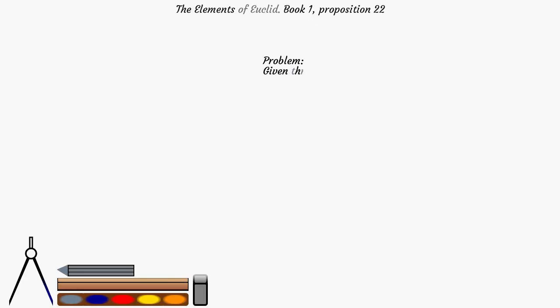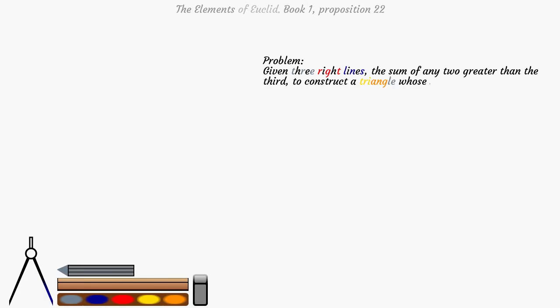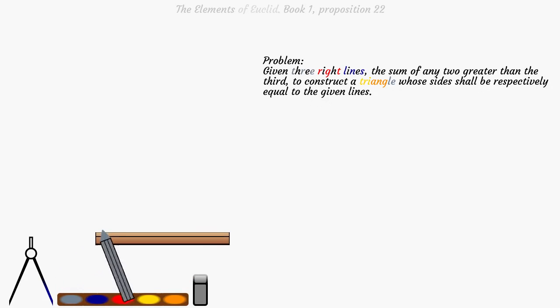Problem. Given three right lines, the sum of any two greater than the third, to construct a triangle whose sides shall be respectively equal to the given lines.